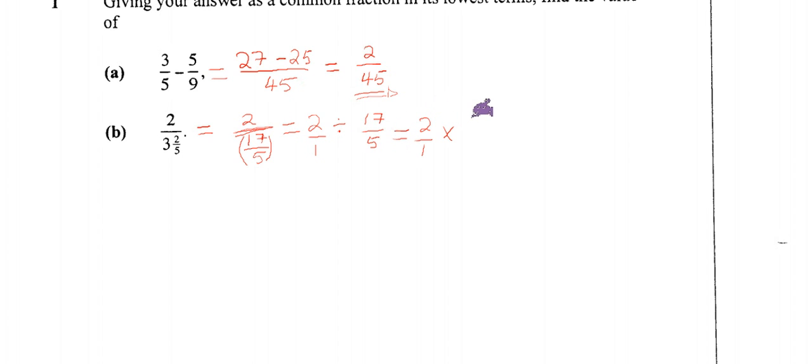And then we do our multiplication. For multiplication here, we simply say numerator by numerator, so 2 times 5, that is 10, over 1 times 17, that is 17. Where they say in its lowest terms, we have to look at our answer and see whether we have a common factor. There is no number that can get into 10 and can get into 17 without leaving a remainder. So that is basically the final answer, we can't take it any further.